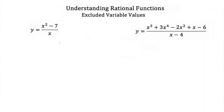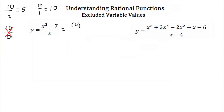Now that we know that rational functions have variables in their denominators, that also means that rational functions have variable values that don't make sense. If I had the number 10 and I divided it by 1 or 2, well that would give me a number — 10 over 2 would be 5, 10 over 1 would be 10. But if I took 10 and divided it by 0, that wouldn't make any sense. If I plugged in 0 for x in y is equal to x squared minus 7 over x, I would get 0 squared minus 7 over 0. 0 squared is 0, so I'd have negative 7 over 0. And again, you cannot divide by 0.